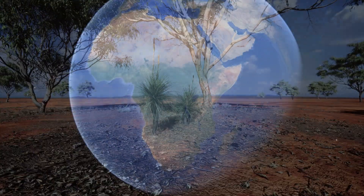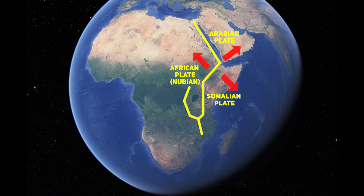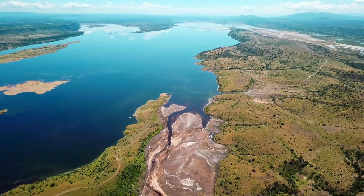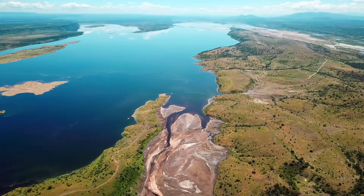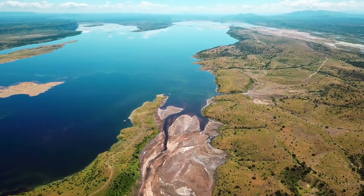As the African plate — a massive tectonic plate spanning millions of square kilometers — began to respond to these deep earth processes, a dramatic transformation ensued. The plate started to stretch, crack, and ultimately split, giving rise to the phenomenon of continental rifting. This was the birth of the East Africa Rift Zone, a grand tearing apart of the continent that would continue for millions of years.